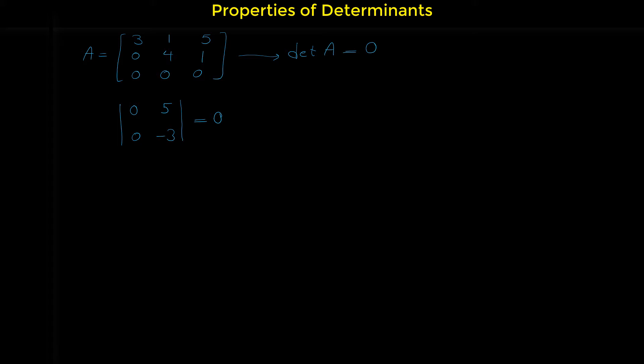This is the first property. The second property we want to discuss is that if two rows or two columns of a matrix are multiples of each other, then the determinant of that matrix is 0.